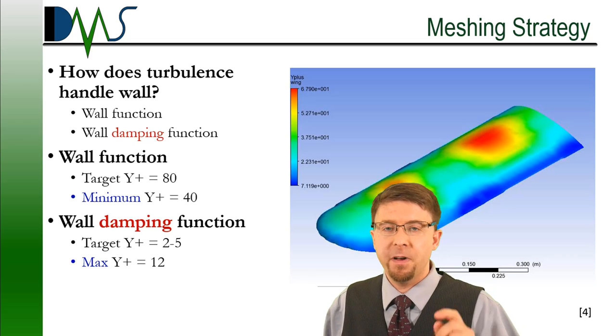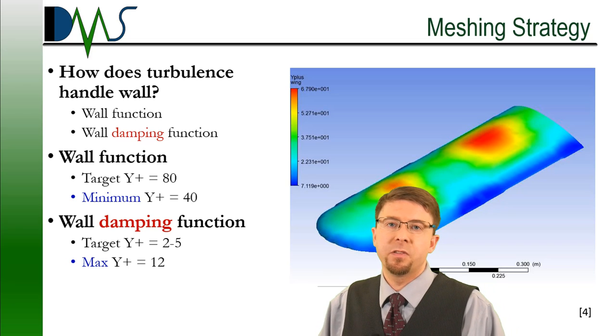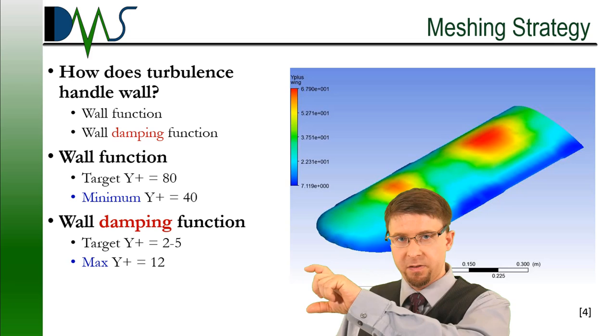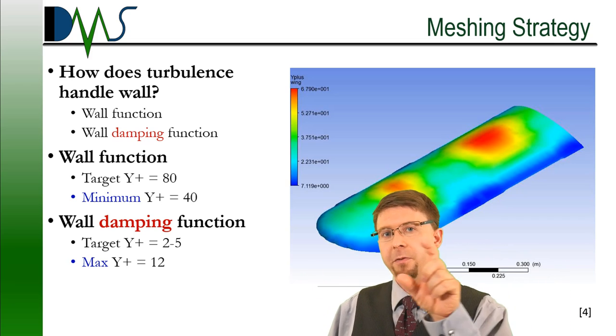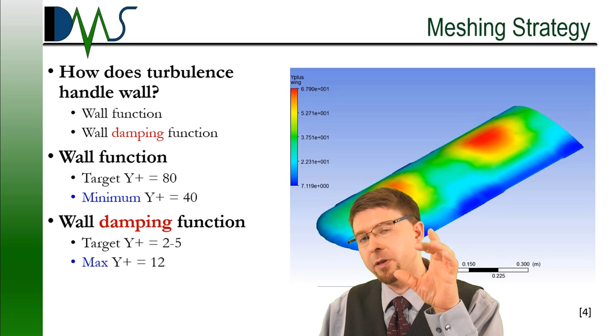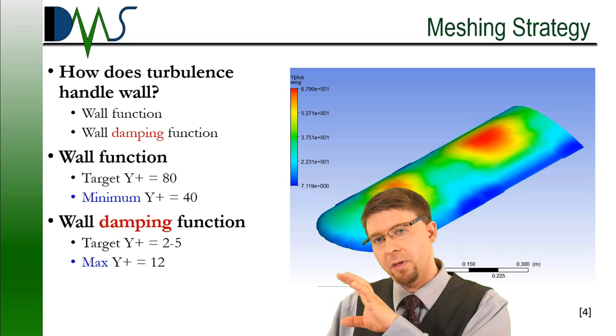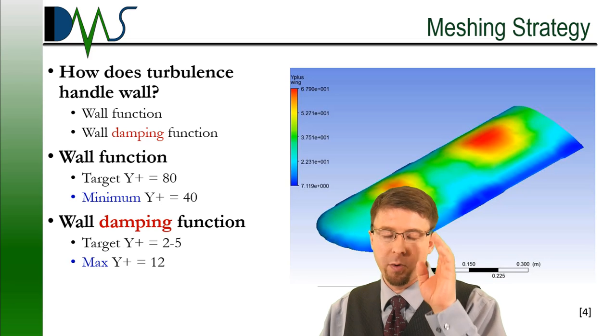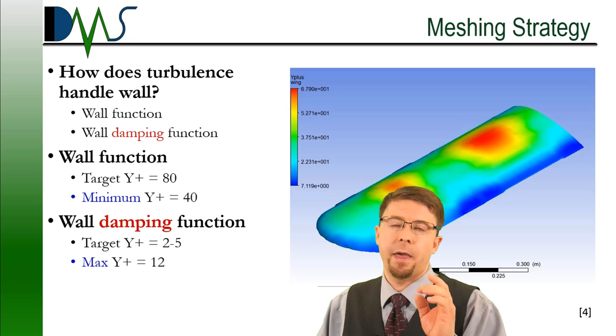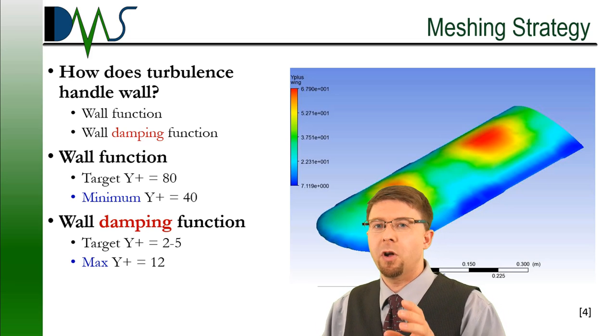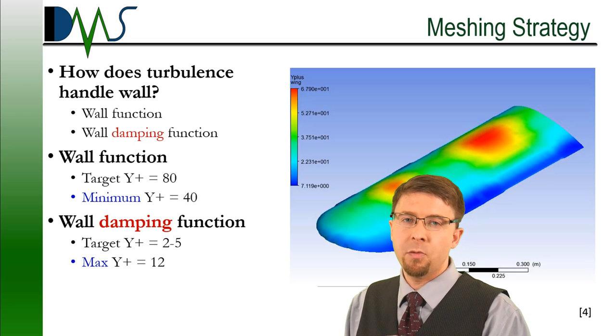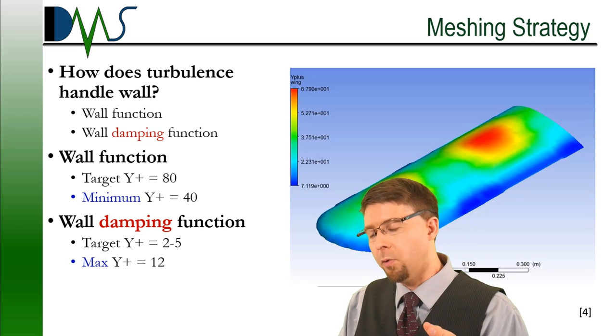In a wall function, what it's actually going to do is it's going to assume that the entire laminar sub-layer is entirely within that first cell thickness. And it's going to integrate that entire laminar sub-layer within that first cell. So that whole thing gets treated slightly differently than all of your other cells. That's what a wall function does. And you're going to apply that when you have your target Y-plus is probably around 80 on your body. You want at least a minimum of 40.